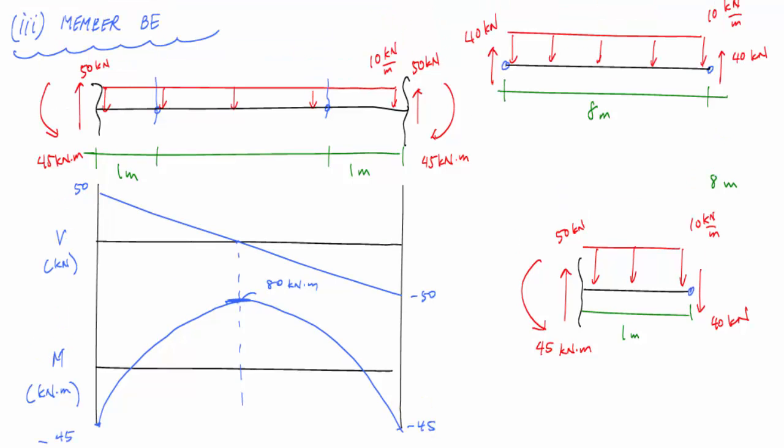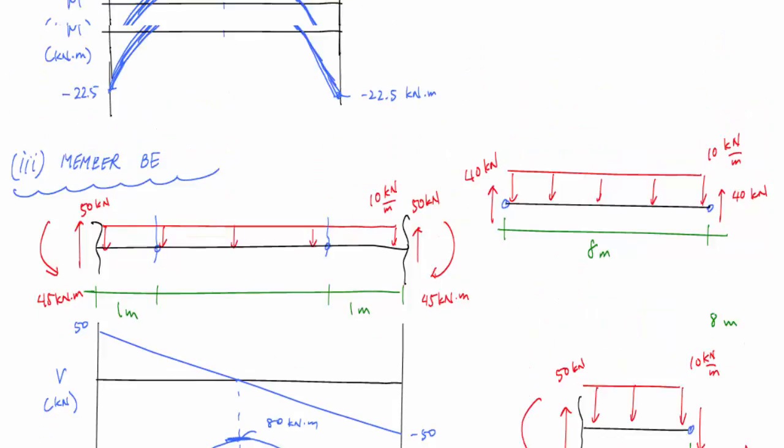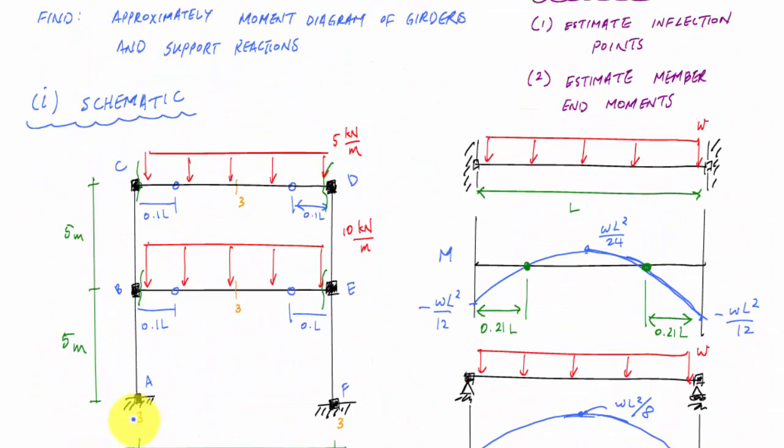So I've gone ahead and I determined my shear and moment diagrams for my horizontal members or these girders that are part of the frame here. And now if I want to calculate the reactions at A, way down here. If I want to calculate approximately, again, the support reactions, like what is going on down here?